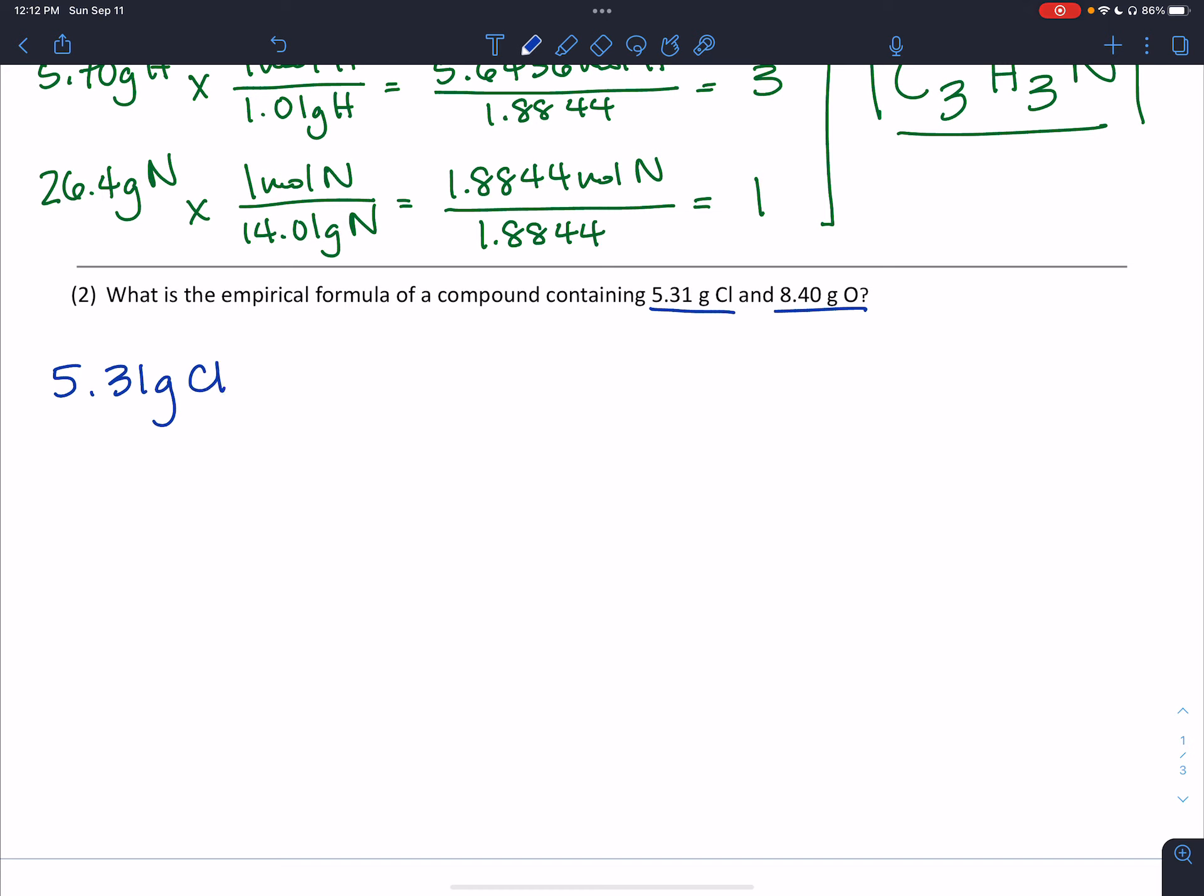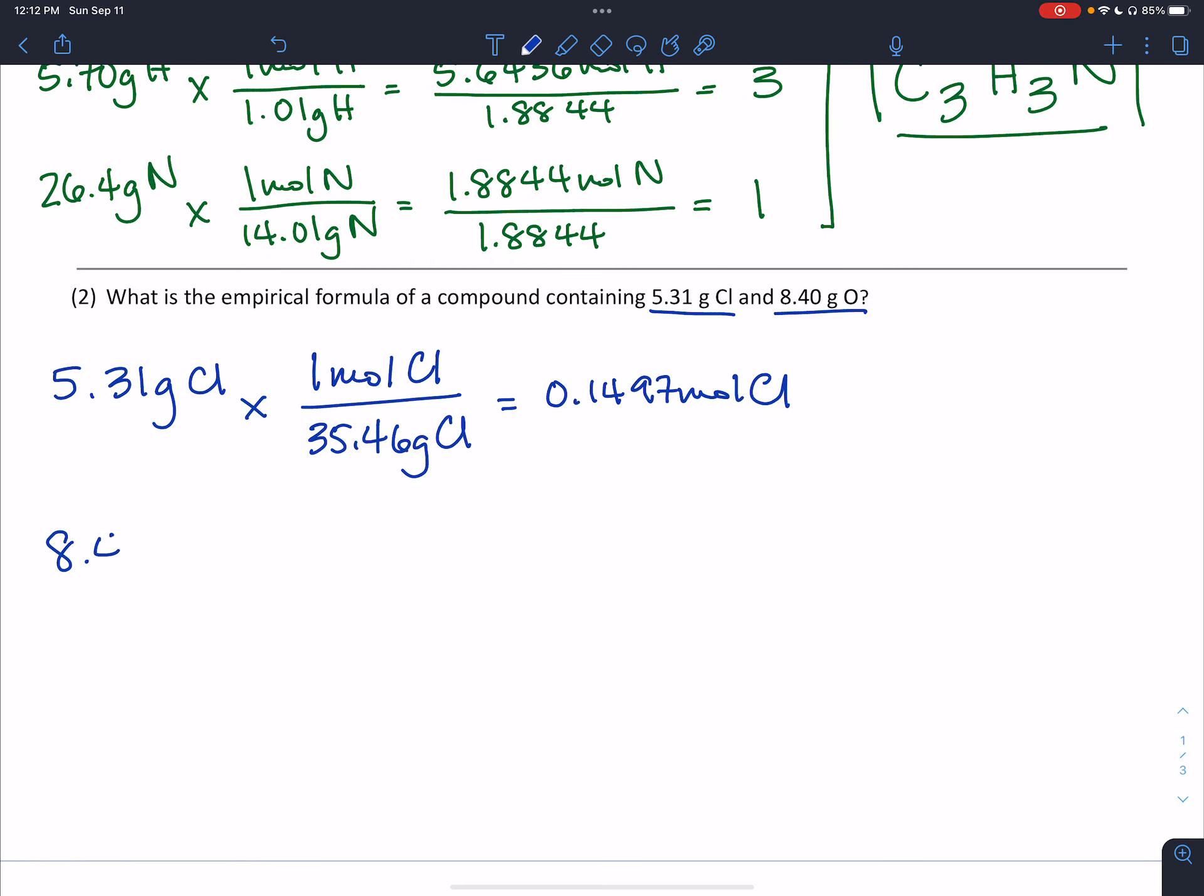I have 5.31 grams of chlorine. To convert that into moles, I need the molar mass. One mole of chlorine has a molar mass of 35.46 grams, and that equals 0.1497. Again, carrying lots of digits. For oxygen, 8.40 grams. Same thing, except I use the molar mass of oxygen. One mole of oxygen has a molar mass of 16.00 grams. That division gives 0.5250 moles of oxygen.